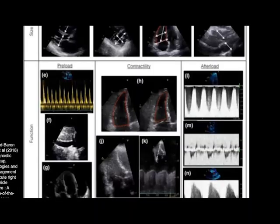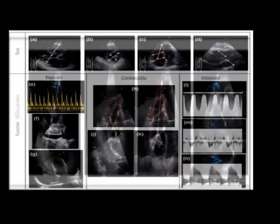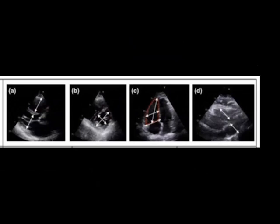The premise I try to link to assessing the left ventricle is: look at size, and for function think about preload, contractility, and afterload. For size, you've got to assess it in all views and compare it with the left ventricle. If it's the same size it's getting to mild-to-moderate; if it's bigger than the left ventricle it's getting towards severe. Look at the interventricular septum — if it's pushed over, that's ventricular interdependence, a sign of increased RV pressure or volume. Increased pressure pushes the septum over particularly during systole; diastolic deviation suggests more volume overload.